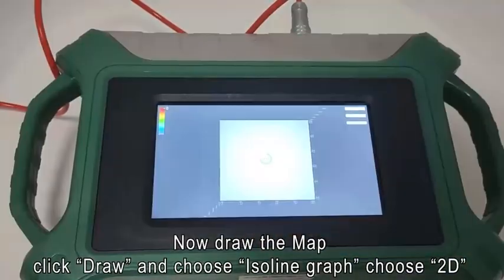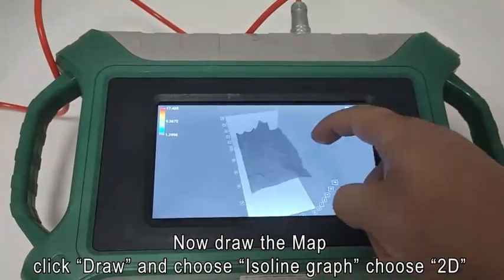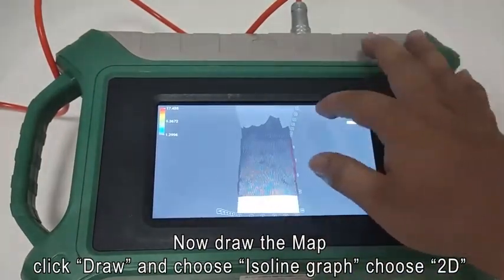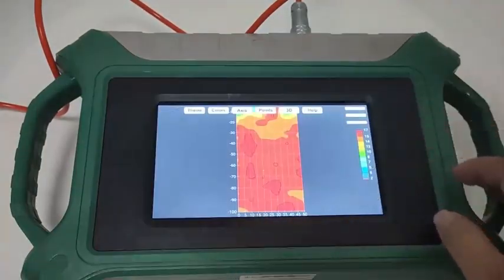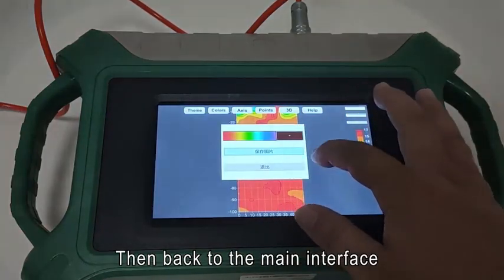Now draw the map. Click draw and choose isoline graph. Choose 2D, then back to the main interface.